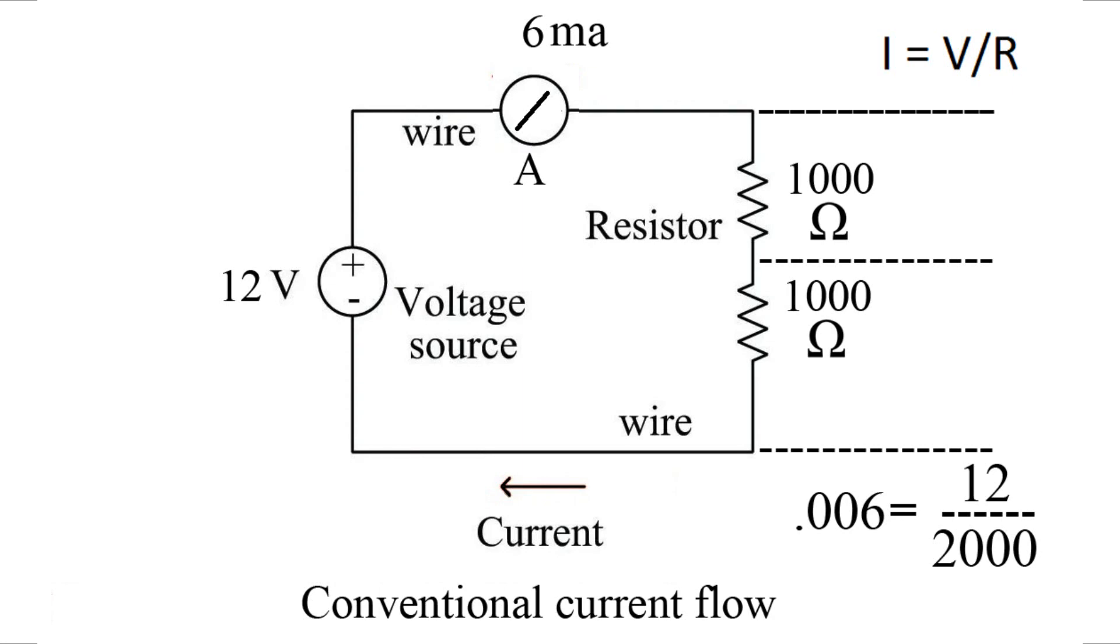Basically what happens is it's a voltage divider. 6 volts goes to the 1000 ohm resistor on top, 6 volts goes to the bottom resistor of 1000 ohms.